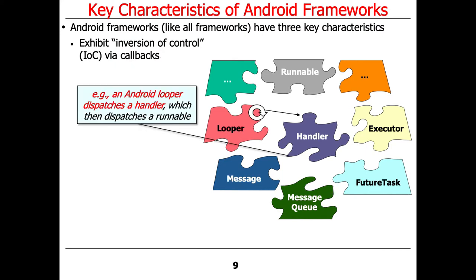So how does that relate to Android? In Android, there's something called a looper. A looper is a component that's part of the Android infrastructure. It runs continuously in the background and dispatches handlers — that's the inversion of control. The handler will in turn dispatch a runnable, and the runnable could be code that you provide. Android concurrency frameworks such as the handlers, messages, and runnables framework use that inversion of control mechanism to dispatch runnables in the appropriate thread of control, typically the user interface thread.